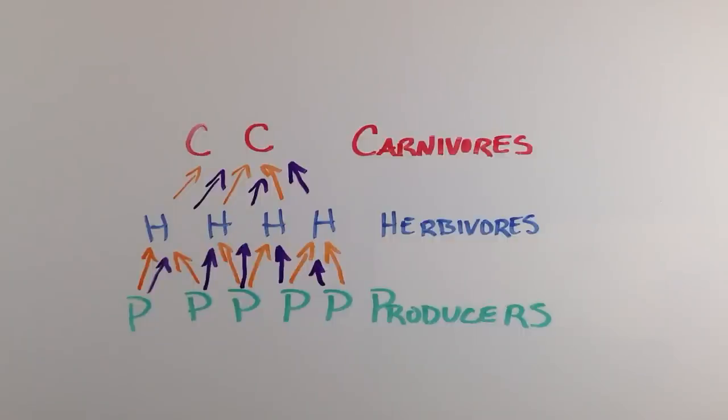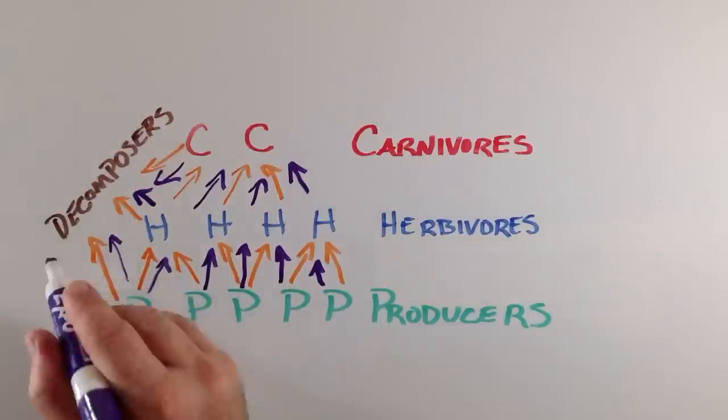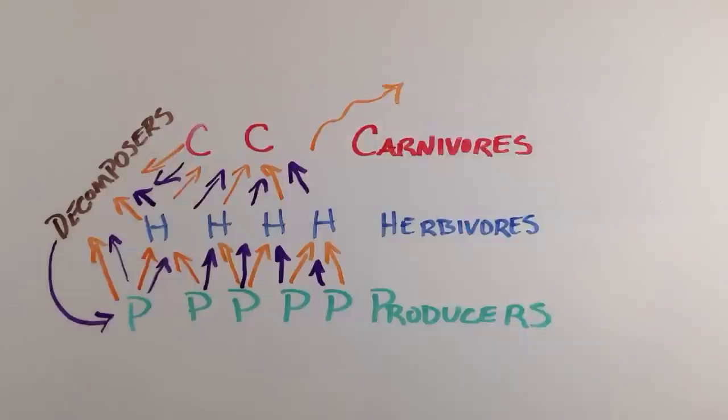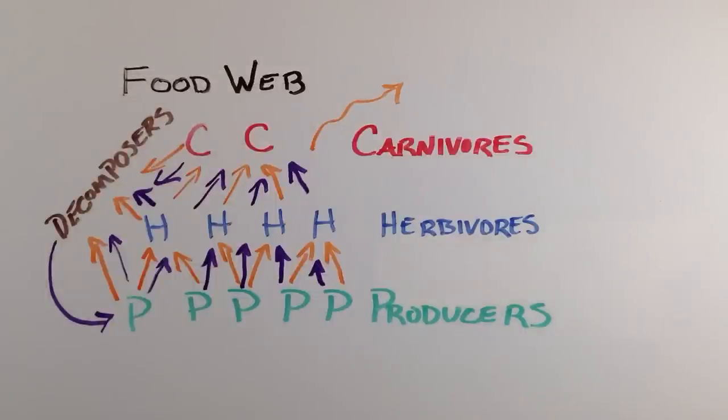Decomposers will eventually access the nutrients and some of the energy in the waste and dead parts of producers, herbivores, and carnivores. Materials are broken down into simple molecules that plants can take up again. The energy, however, is eventually returned to the environment as heat. This feeding relationship among organisms is called a food web.